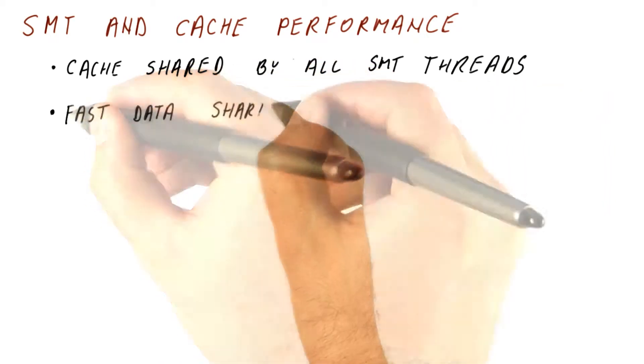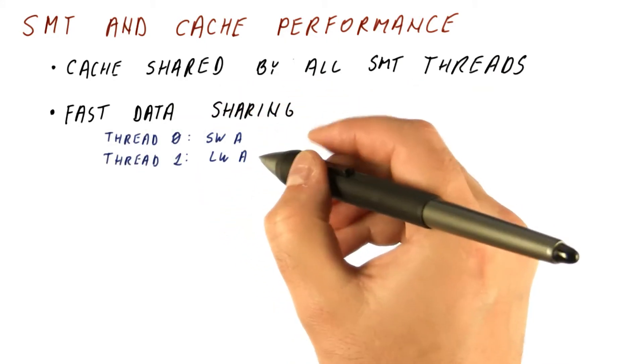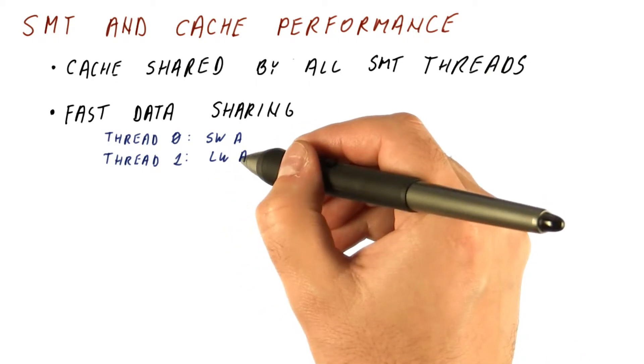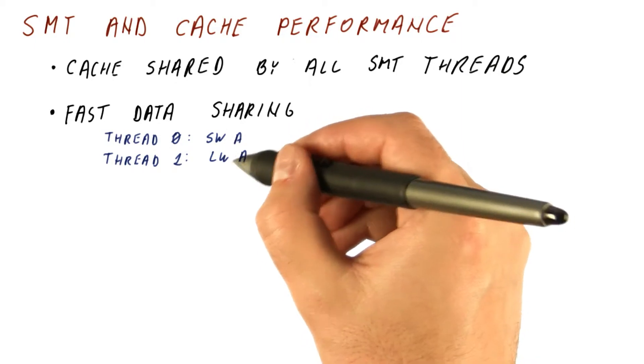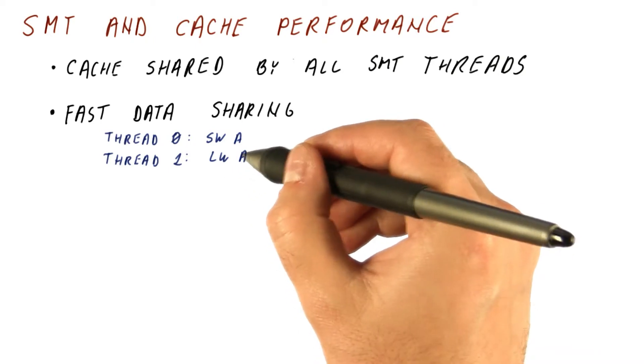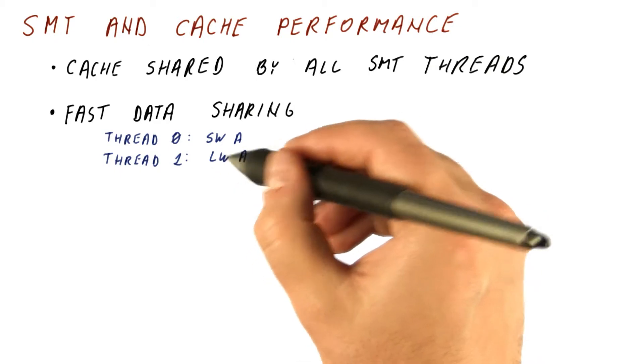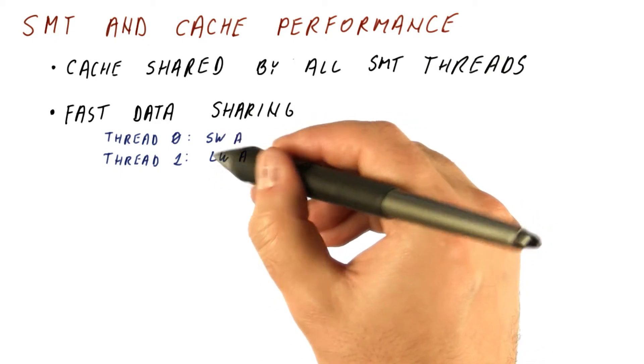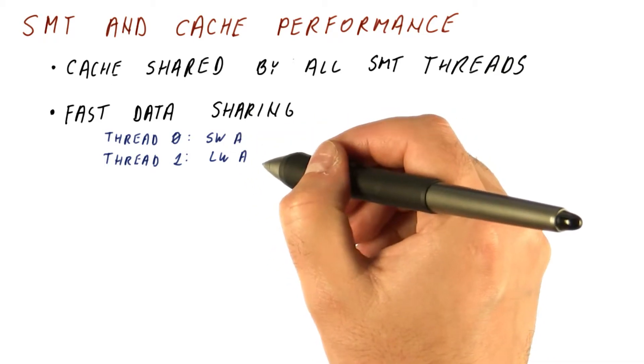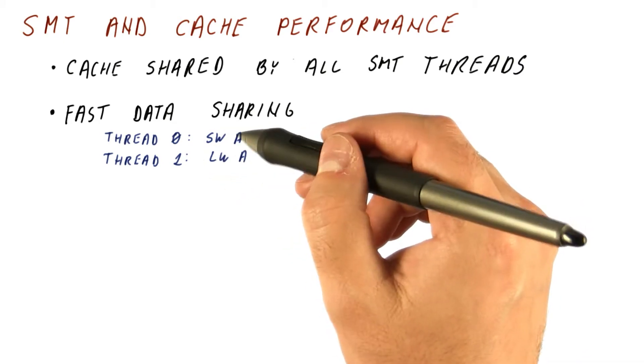The good property is that we get fast data sharing among the threads. When thread zero stores something and then thread one wants to read it, it gets to get a cache hit. So any communication between these threads that happens within a short span of time, like we store and then we quickly load in another thread, will go through the cache and have really, really good performance. Because the load here will always be a cache hit, assuming that the store happened recently. So the communication now no longer goes through shared memory. Because we have a cache, the communication tends to go through just the cache.